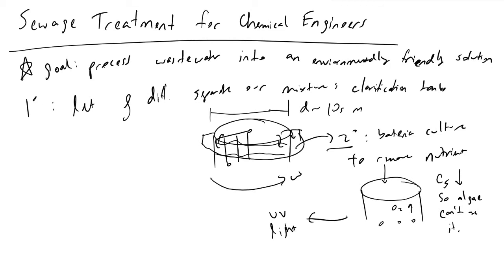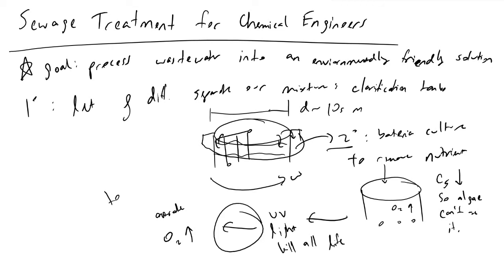The UV light kills all the life present in the solution, including the bacteria. After that, the next step is to aerate the water again, because we need to bring O2 levels back up to a sufficient level so we don't kill fish. If we took the water at this point and dumped it into the bay, a lot of fish would die because the oxygen concentrations are so low that fish can't perform cellular respiration either.